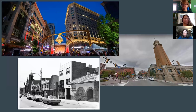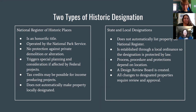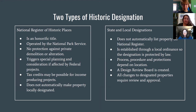Some historic districts you might be familiar with in the Cleveland area are Playhouse Square, the West Side Market area and West 25th Street in Ohio City, and Little Italy. Now we're going to talk about the two different types of historic designations: the National Register of Historic Places and then state and local designations.